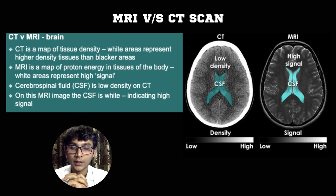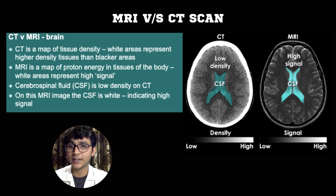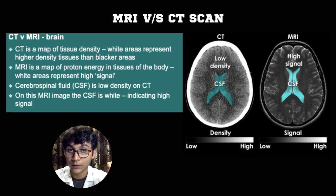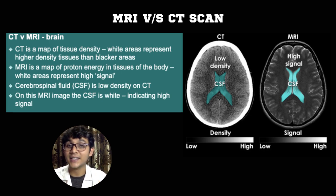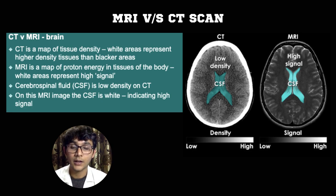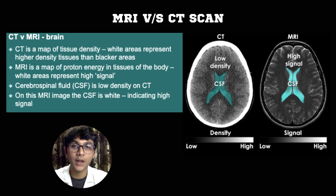Let's start by comparing MRI versus CT scan. CT scan is very good at mapping tissue density, differentiating bone from soft tissue, and showing bright images of bone across the body. MRI is a map of proton energy in the tissues, where white areas represent high intensity signals. High density is a CT term, high intensity is an MRI term. We do MRI because CT scans are not good at delineating differences within soft tissue, including vascular and inflammatory changes.